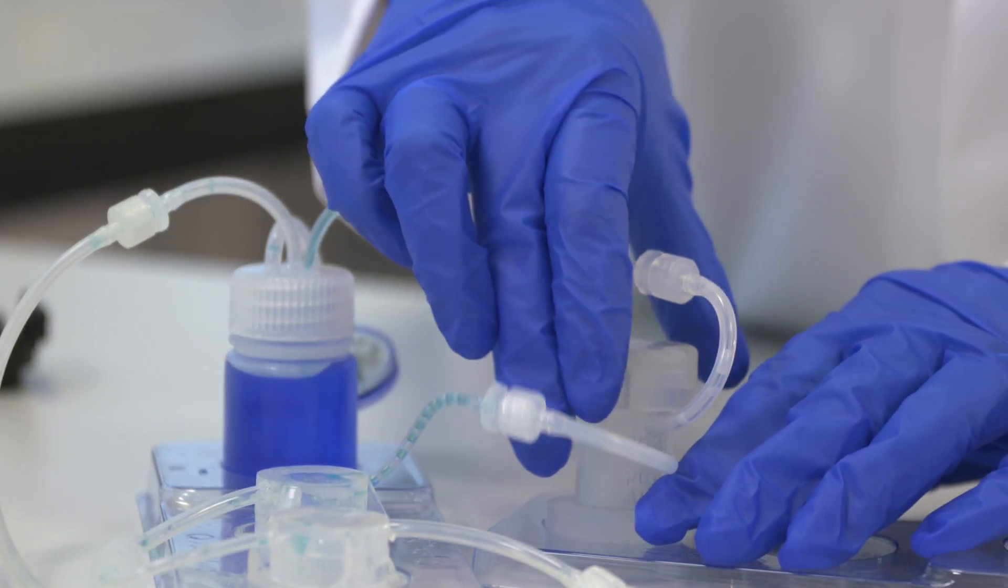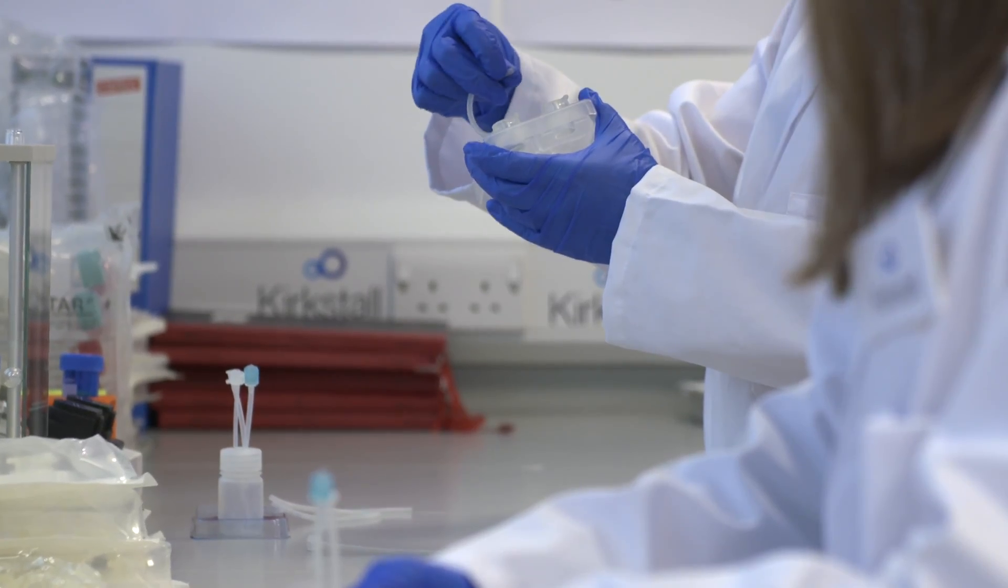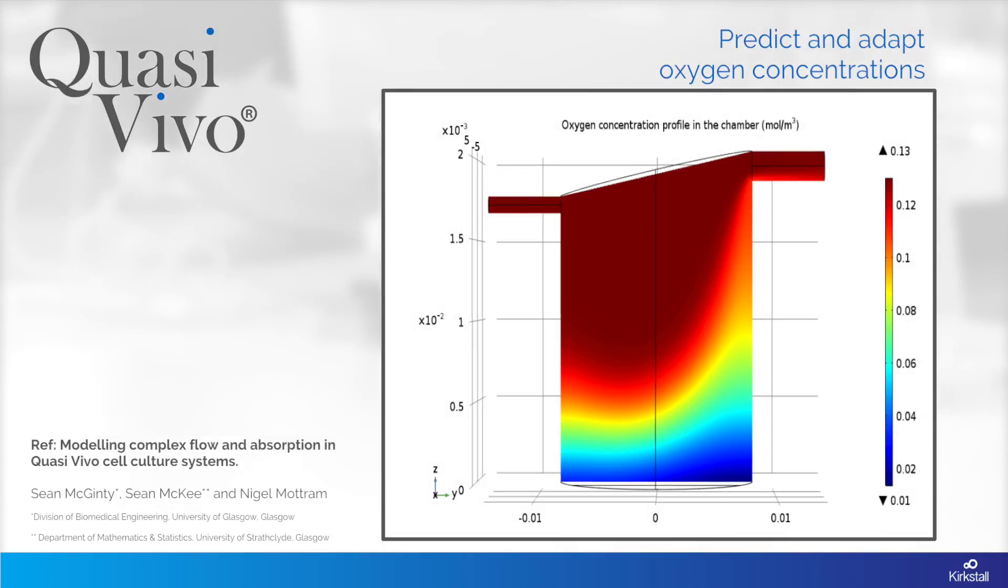The Quasivivo systems were designed to provide metabolically active cells with ideal oxygen concentrations. Furthermore, oxygen gradients within the chamber can be predicted using modeling software and adapted by using inserts to alter the depth of the chambers.